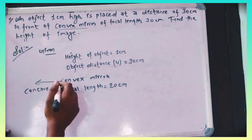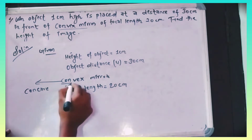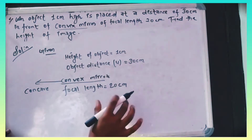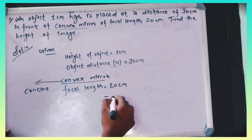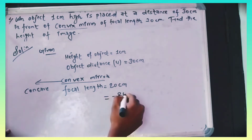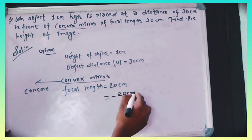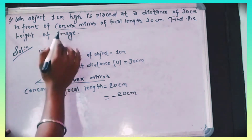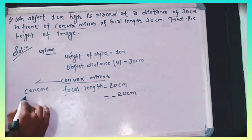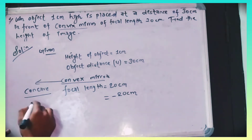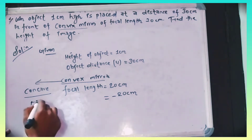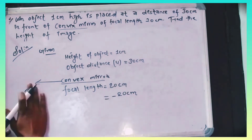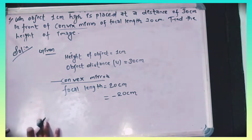If you have a convex mirror, the focal length is positive — plus. For a concave mirror, the focal length is minus. So for this convex mirror, focal length is positive.